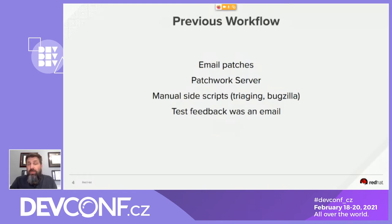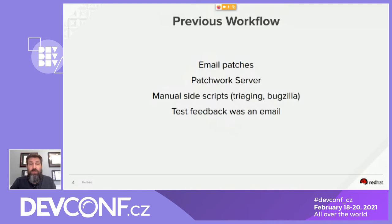Putting this all together, our old workflow revolved around a patchwork server and a mailing list. The maintainer spent most of the time tagging emails and patches with information that determined whether the patches were reviewed and ready to be committed or not. Automated testing happened on the side and was manually coordinated to block the patches based on its results. A lot of manual work, but it worked great for a long time.